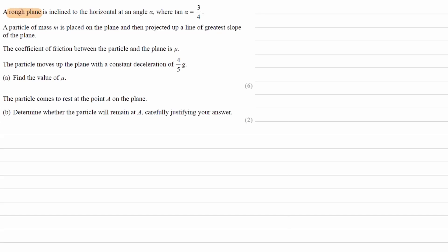A rough plane is inclined to the horizontal at an angle of alpha, where tan alpha is equal to 3 over 4. So there is our slope, and we have a particle of mass m placed on the plane, which is projected up a line of greatest slope of the plane.